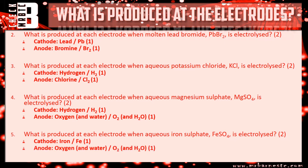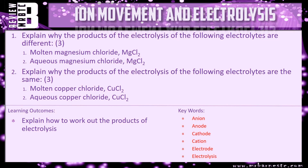That's everything for this video, but there is a quick set of review questions. Question one: explain why the products of electrolysis of molten magnesium chloride and aqueous magnesium chloride are different - state the products for both and explain using the rules. Question two: explain why the products of molten copper chloride and aqueous copper chloride are the same - state what is produced and explain using the rules. That brings this video to an end, hopefully you've enjoyed it.